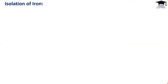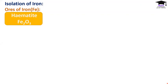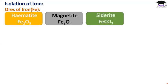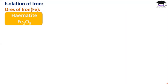Now let us see the isolation of iron. As before, the four steps are: selection of ore, concentration, extraction of crude metal, and refining. The ores of iron are hematite (Fe₂O₃), magnetite (Fe₃O₄), siderite (FeCO₃), and iron pyrites (FeS₂). We are going to isolate iron from hematite.